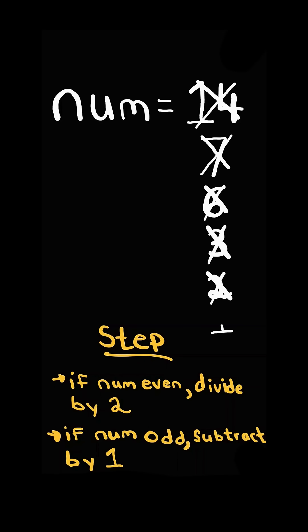It's even, so we divide by two. And finally, subtract one since it's odd. And the total amount of steps taken was six.